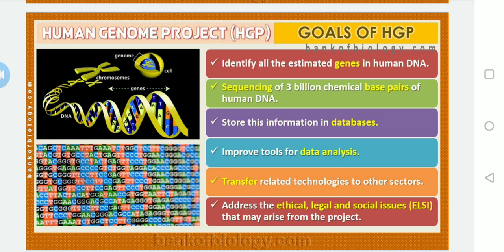Regarding ethical issues: is it ethical or non-ethical? Is it legal or illegal? And what social issues might arise? For example, when they started the production of test tube babies, questions arose about who would take care of the child, whom the child should call dad or mom, how society would accept it, and whether it would be legally accepted. Those are all ethical, legal, and social issues that may arise from the project.